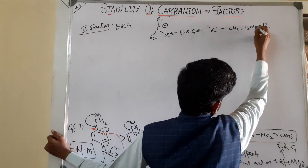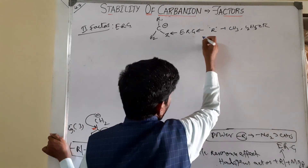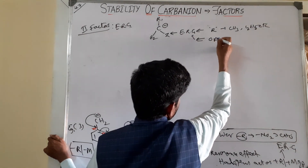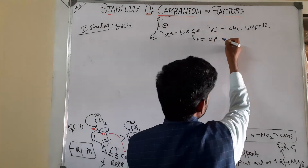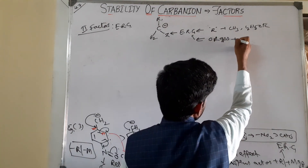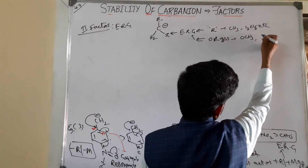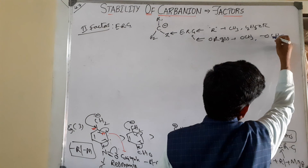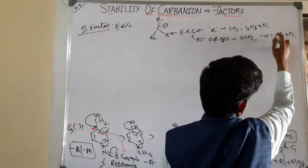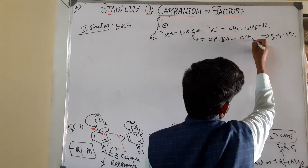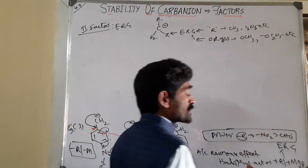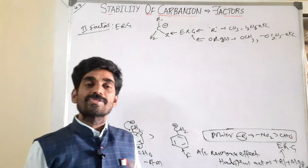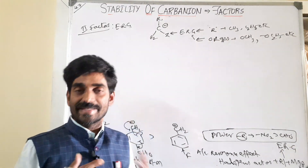These are all electron releasing groups. Note that according to the inductive effect, alkoxy groups are withdrawing groups, but according to the resonance or mesomeric effect, they are releasing groups. So if these groups are present, what happens?